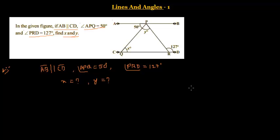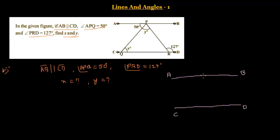To find X and Y, first we take AB parallel to CD and draw those two parallel lines, marking points A, B, C, D. Then we draw line PR, where P and R are the intersection points. Here we have 127 degrees, which is angle PRD.